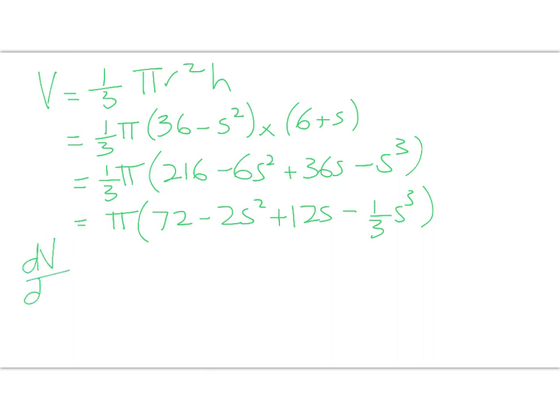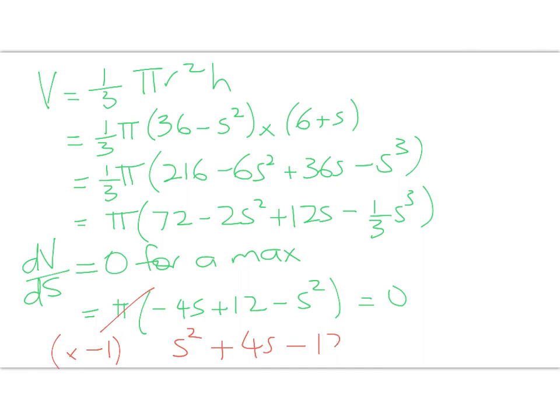For a maximum we need to solve dv by ds equals zero. We don't need to check that we've found a maximum but we might have a look at that at the end anyway. dv by ds equals, we can just leave the pi there, negative 4s plus 12 minus s squared. We want that to be equal to zero. We can divide both sides through by pi, and multiplying through by negative 1, we get s squared plus 4s minus 12 equals zero.